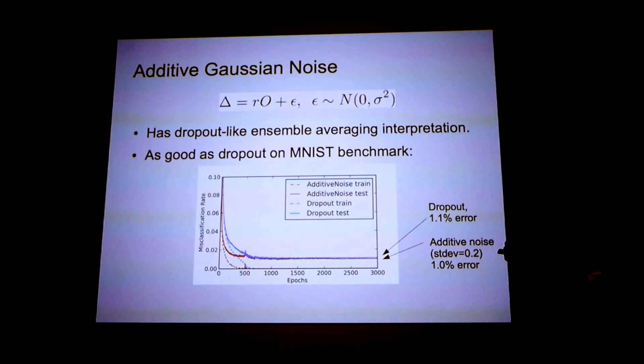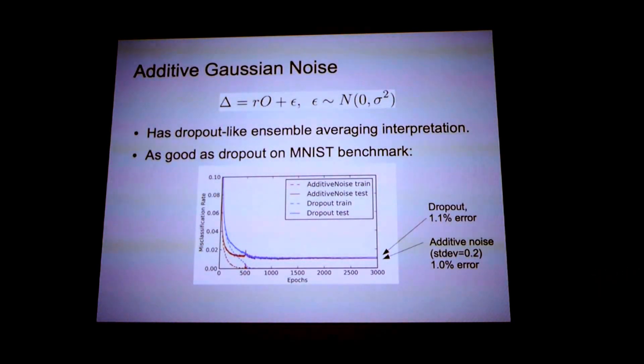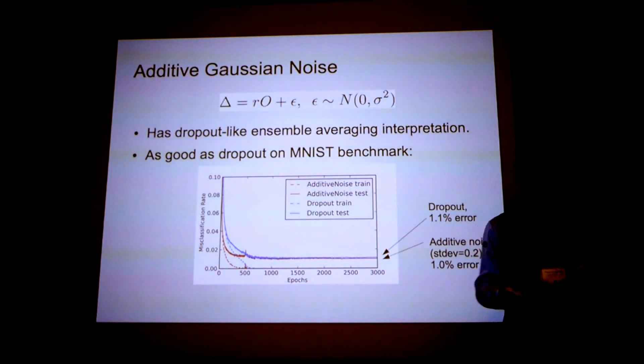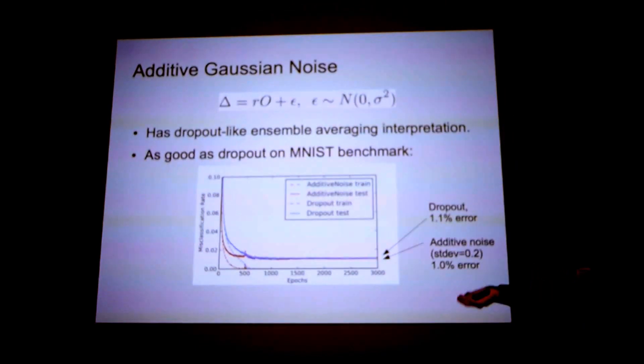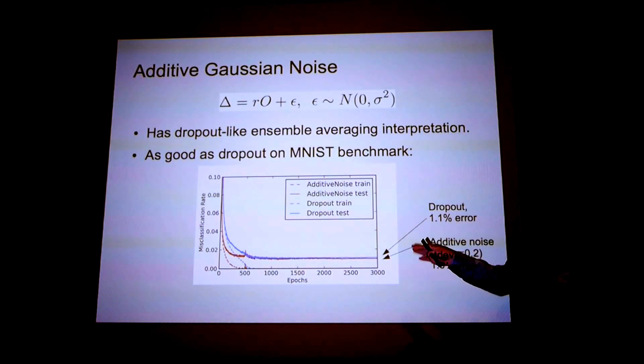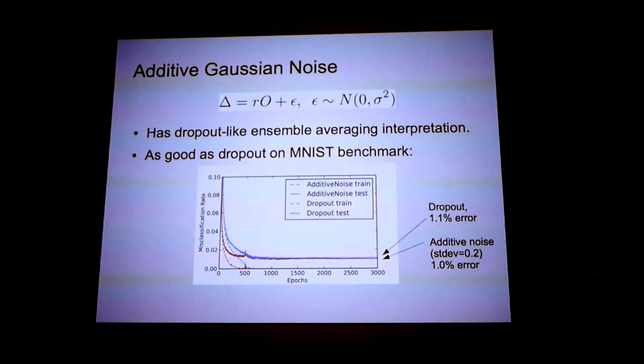If we replicate the dropout results in the paper and then we also, with all the same parameters, just do it with additive Gaussian noise, we actually get better results. So this is on the MNIST dataset. You can see that the additive Gaussian noise algorithm trains faster and still achieves better generalization. On MNIST, I mean this isn't a huge difference, but it supports the claim that additive Gaussian noise is doing something very similar to dropout.